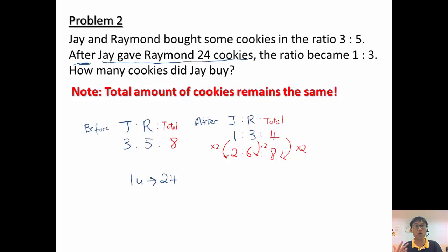How many cookies did Jay buy? When Jay bought them, that is the before part. Before was 3 units. So 3 units equals 3 times 24, which gives 72.